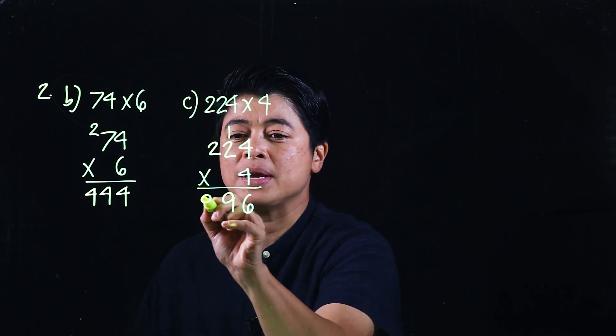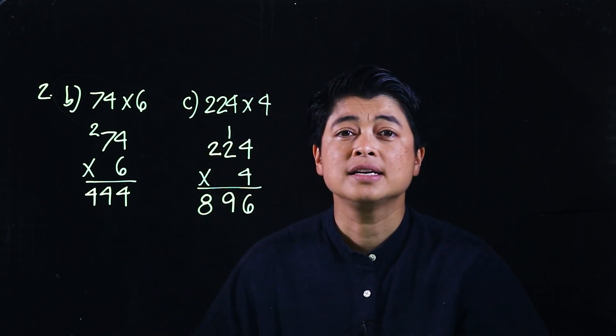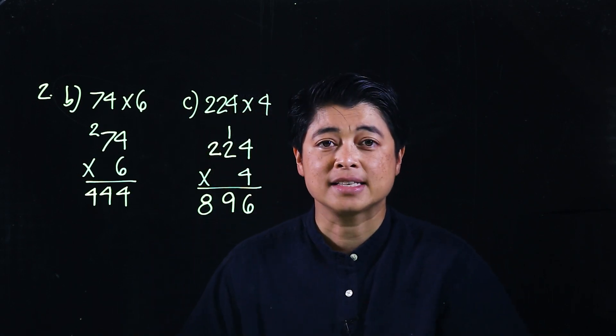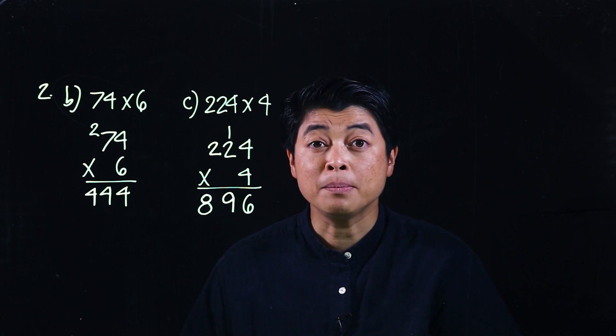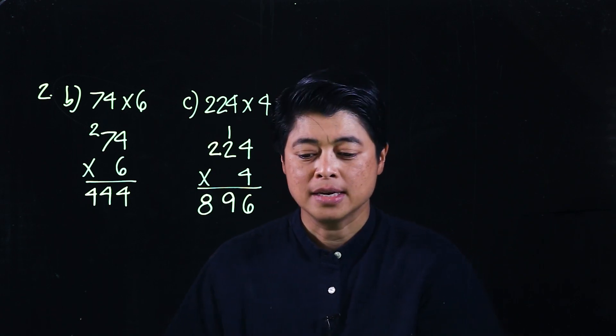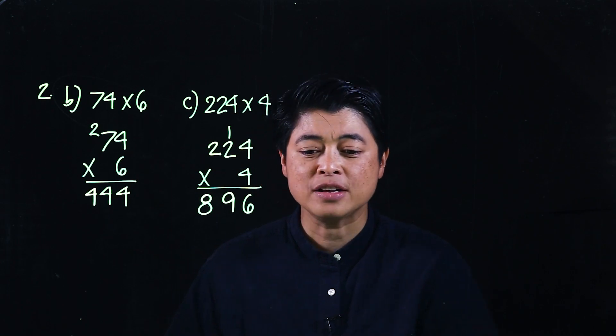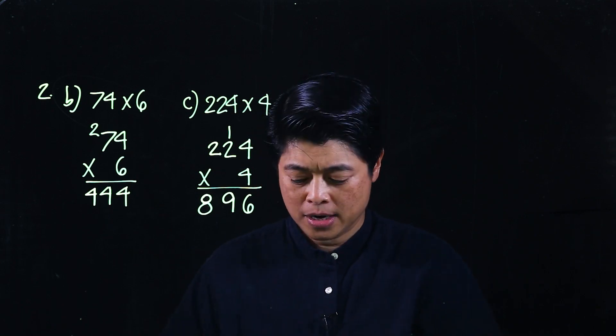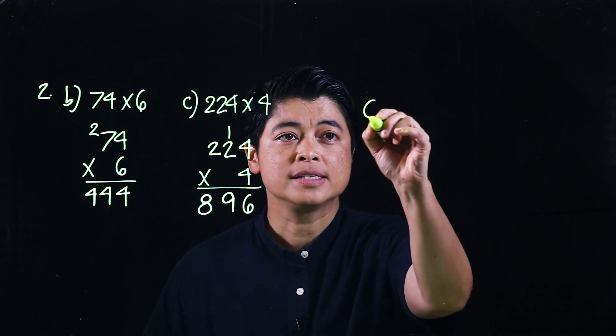If we multiply 4 by 2 again that will be 8, giving us 896. The next set of problems that we will be doing have bigger numbers. This will be on page 124, problem number 6.